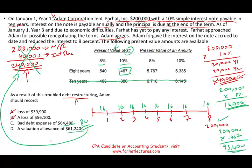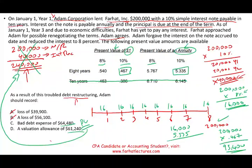Now I need the present value of the $16,000 annual payments — it's an annuity. Again, do I use 8% or 10%? I use 10% to discount, because I want to earn 10%. Although the cash I'll receive is based on 8%, I discount at 10%. I'm at a loss — I know that going into the renegotiation, I knew I'd have to write down my loan.